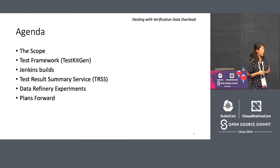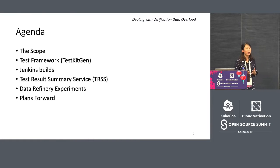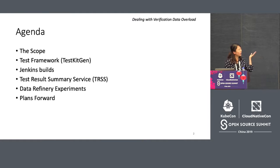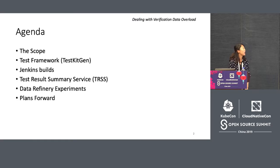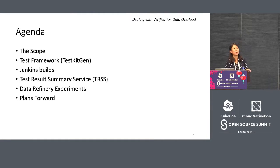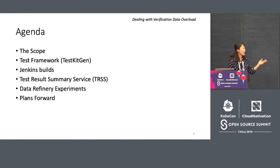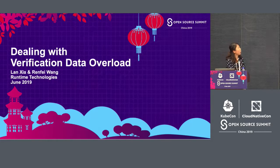然後我們會講一下我們的Jenkins編譯版本，這也是我們自動化的Build。接著會介紹我們測試結果的總結服務。我們也用了深度學習的技術，對數據進行提煉，並做了一些數據提煉的實驗。最後我們還會講一下對未來的計劃。